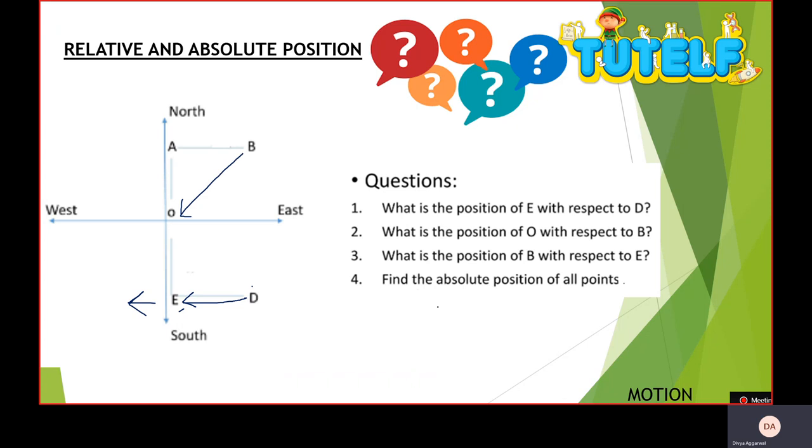What is the position of B with respect to E? So I made an arrow from E to B. So this is our north-east direction.